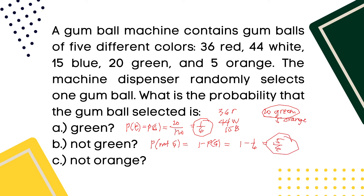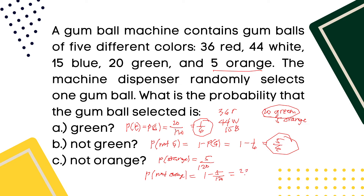Next, what is the probability of not orange? The probability of orange is 5 over 120. Therefore, the probability of not orange is equal to 1 minus 5/120. Simplifying, 5/120 reduces to 1/24, so 1 minus 1/24 equals 23/24. That is the answer for example number 2.